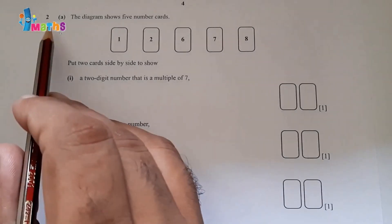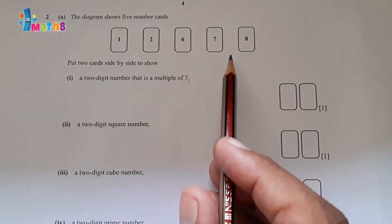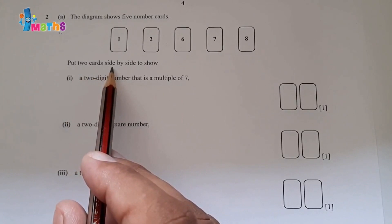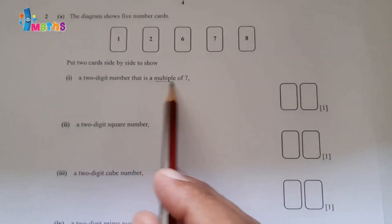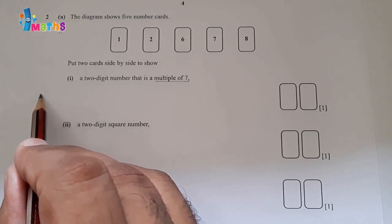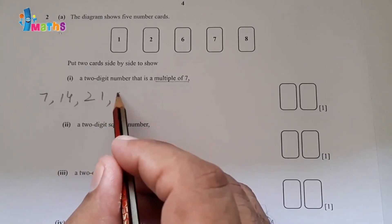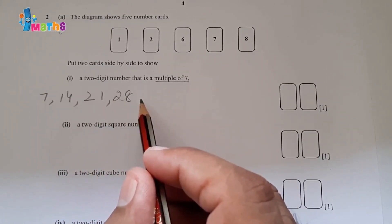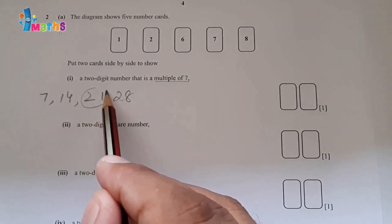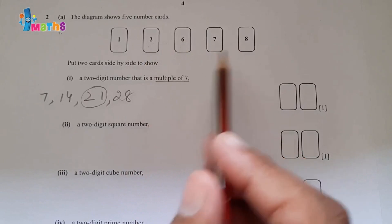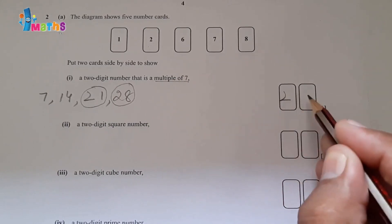Question number two part a: the diagram shows five number cards. Put two cards side by side to show a two-digit number that is a multiple of 7. Multiples of 7 are 7, 14, 21, 28... From the available cards we can arrange 21 and also 28. So one acceptable answer is 21.